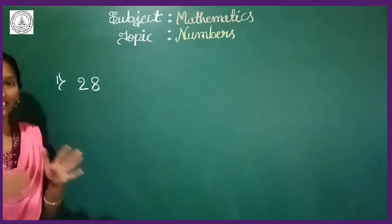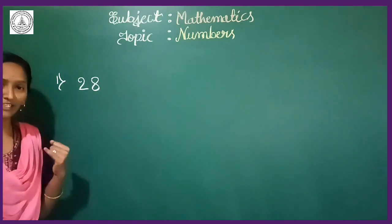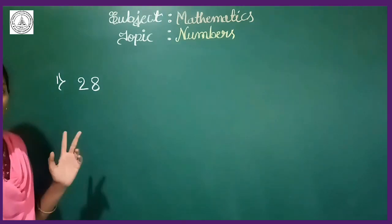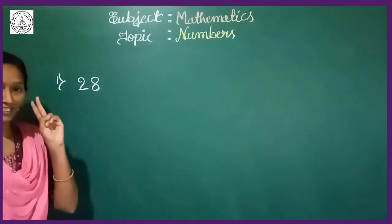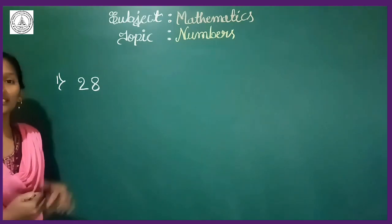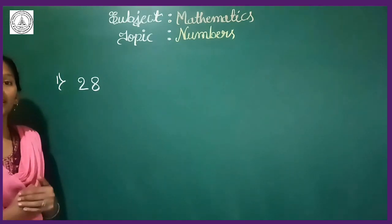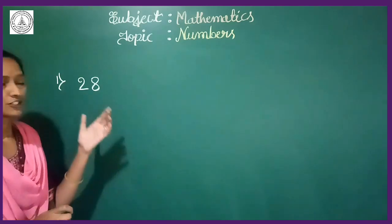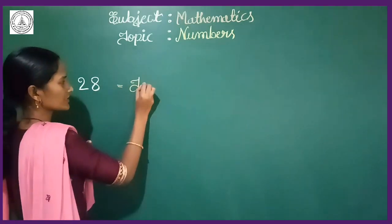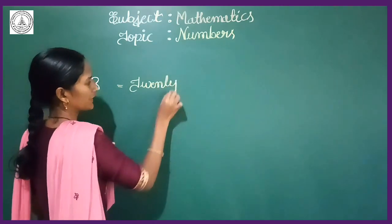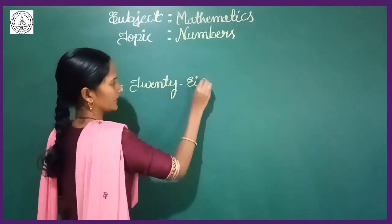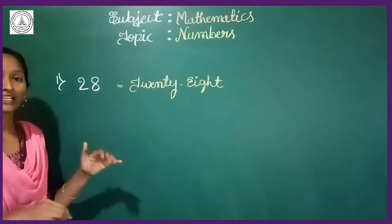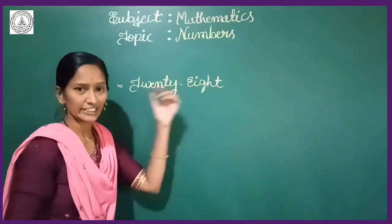Now come to the next concept. Which number is it? Yes, it is 28 — a 2-digit number. How can you write this in words? That is a number name. The number name of 28: first write down the spelling of 20, then 8. Orally you say 28, but in words it is twenty-eight.